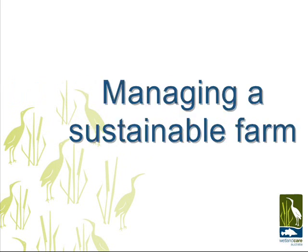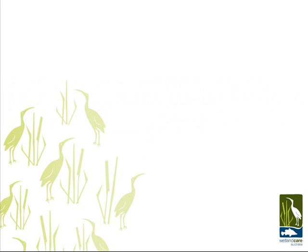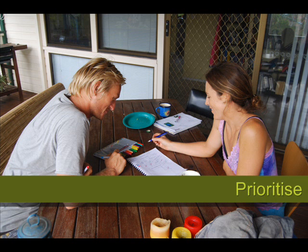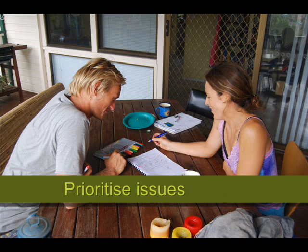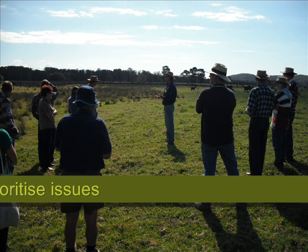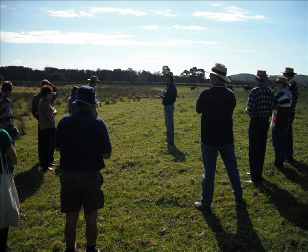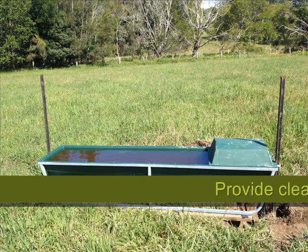Managing a sustainable farm. For effective management, the first step is to prioritise issues with a farm plan, including creating target goals and preliminary monitoring.